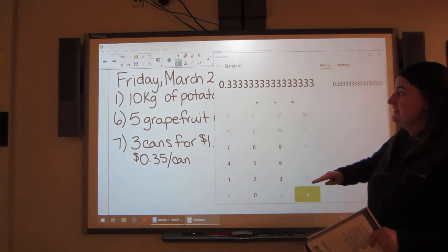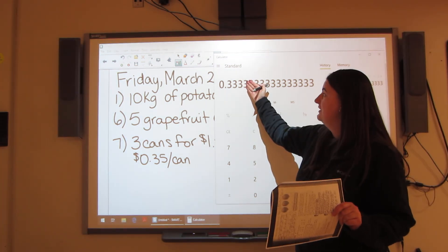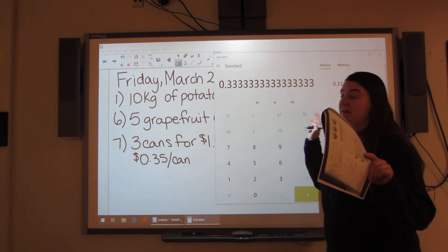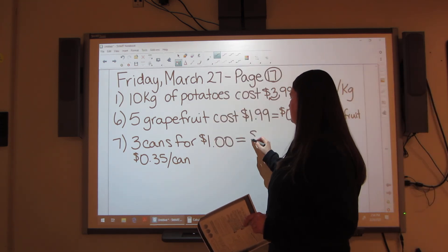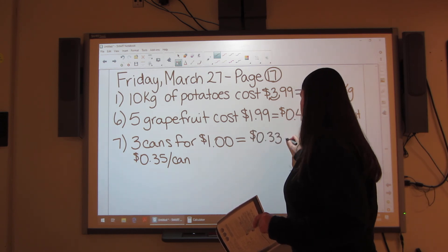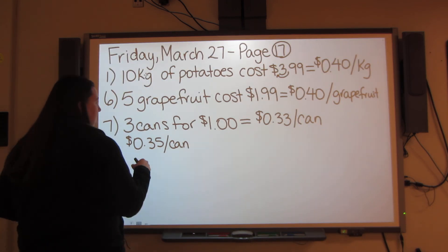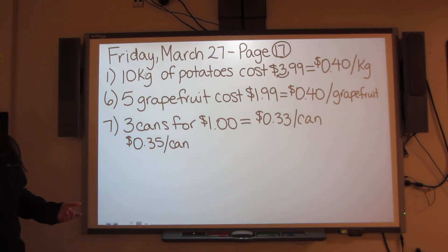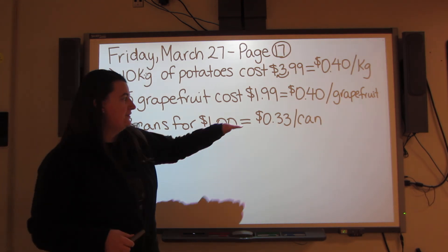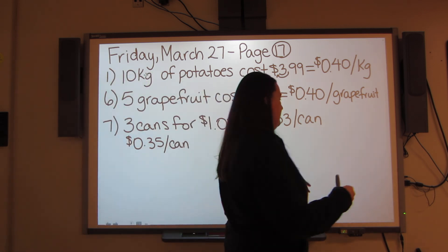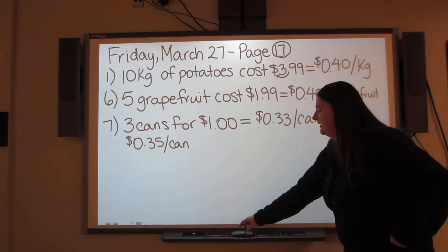So when you've got, if you're using a calculator, you're just taking the first two digits after the decimal. $0.33. So you ignore all the rest of it, which means this one is $0.33 per can. And so you look and you think, okay, which one's the better deal? Which one's cheaper? Is it $0.35 per can or $0.33 per can? This is cheaper. It's the better deal.